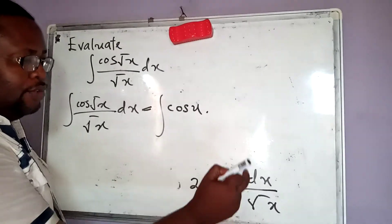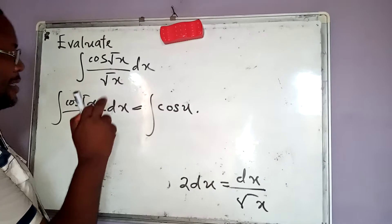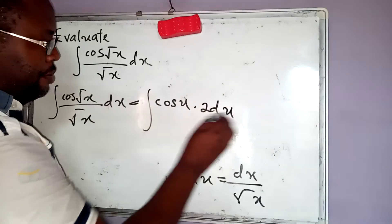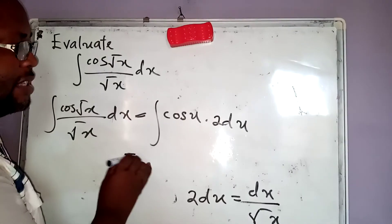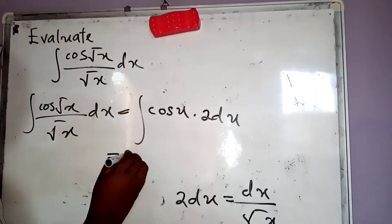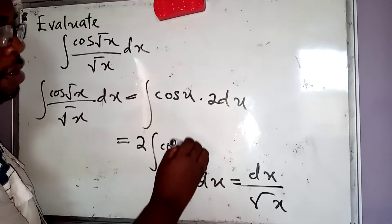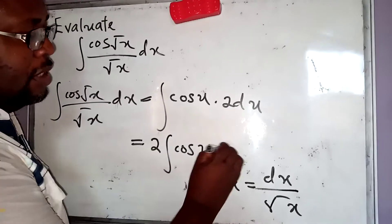The dx by root x, that is the dx by root x. So we simply are multiplied by 2 du. And which now boils down to, these two can be brought out. We have 2 integral of cosine of u du.